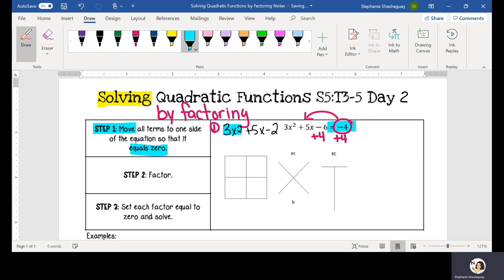So now I have my a term, which I can fill in to the area model here, 3x squared. I have my C term, negative two, which I can fill into my area model here.